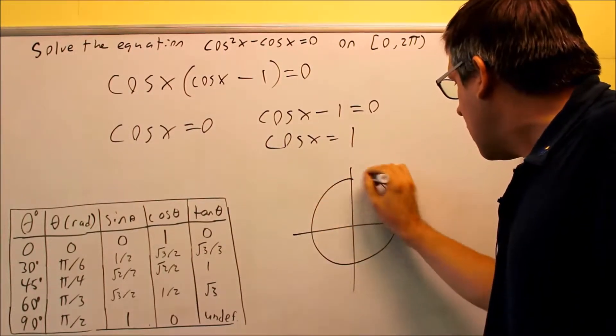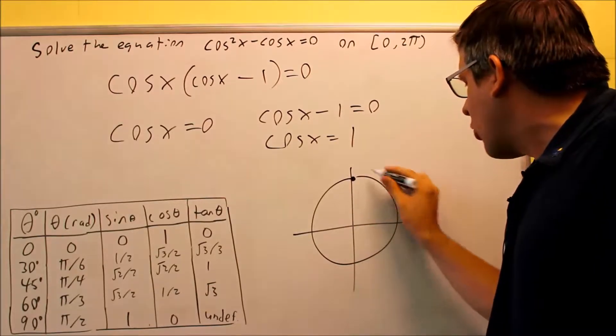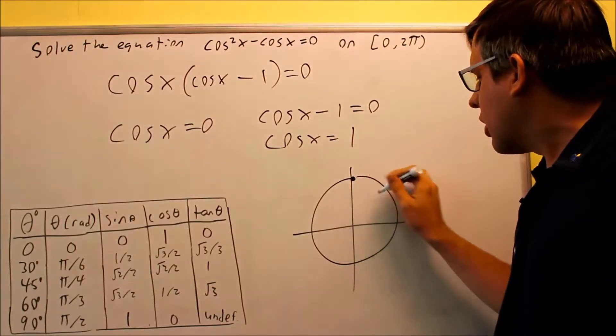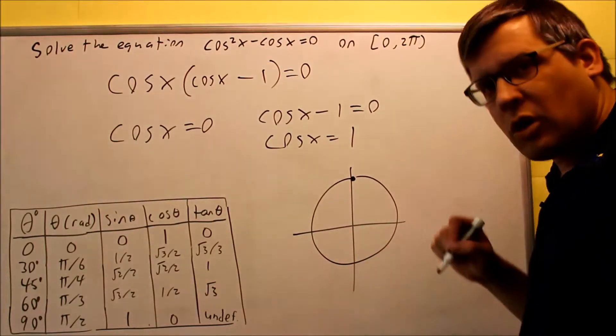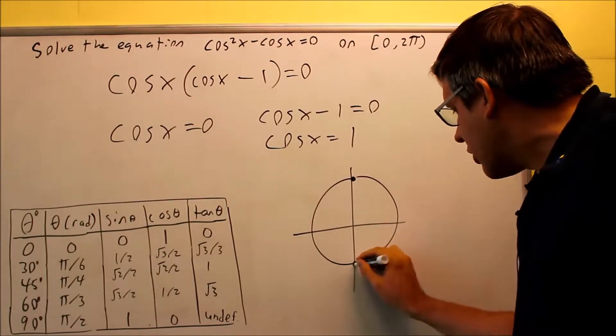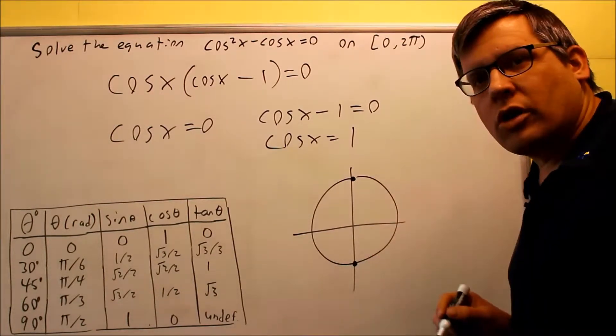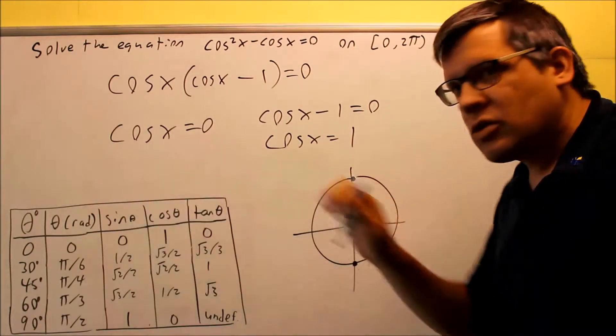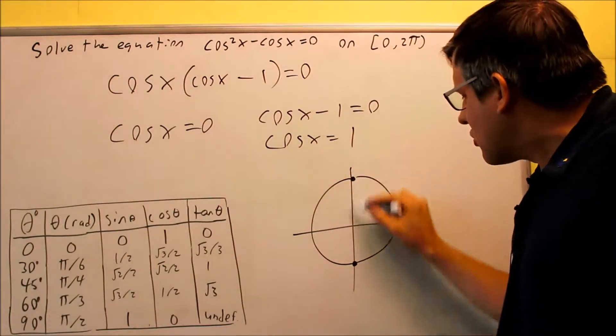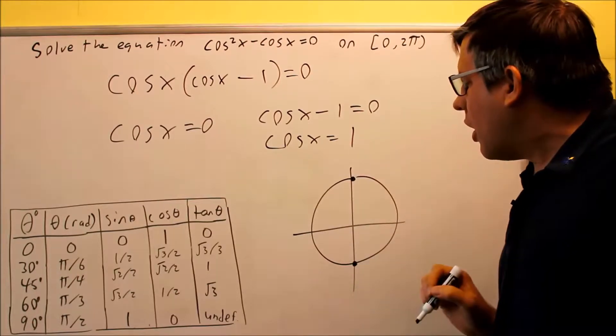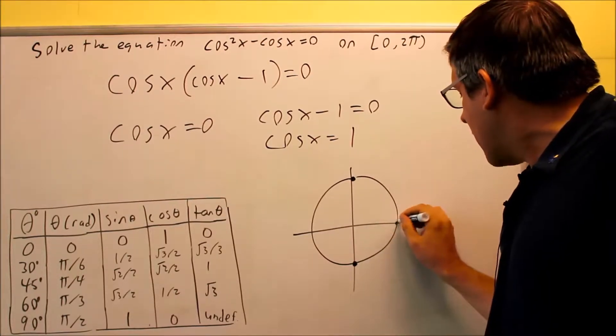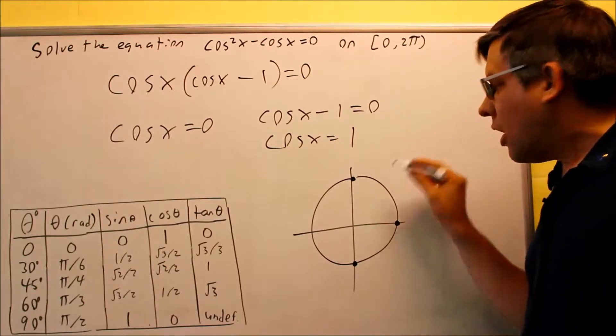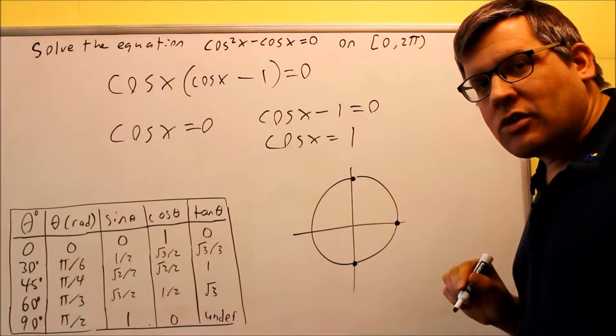What you're going to do is, on the unit circle, you want to look at these points on the unit circle here, the place where cosine equals zero and where cosine equals one. Well, here's two spots on the unit circle where cosine is going to equal zero because that's where the x value is zero, cosine is always the x value. Where cosine equals one, that's going to be this point right here.